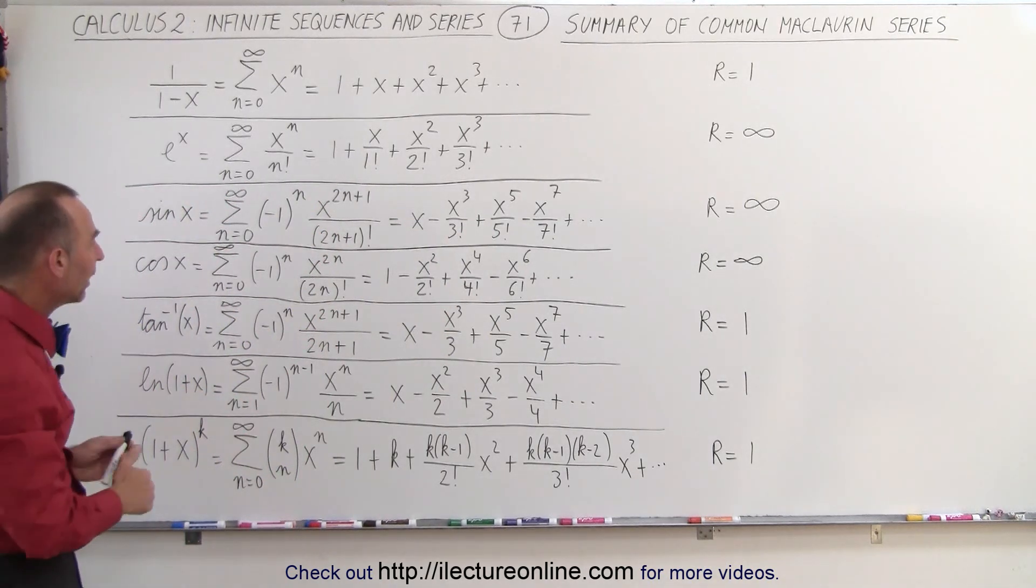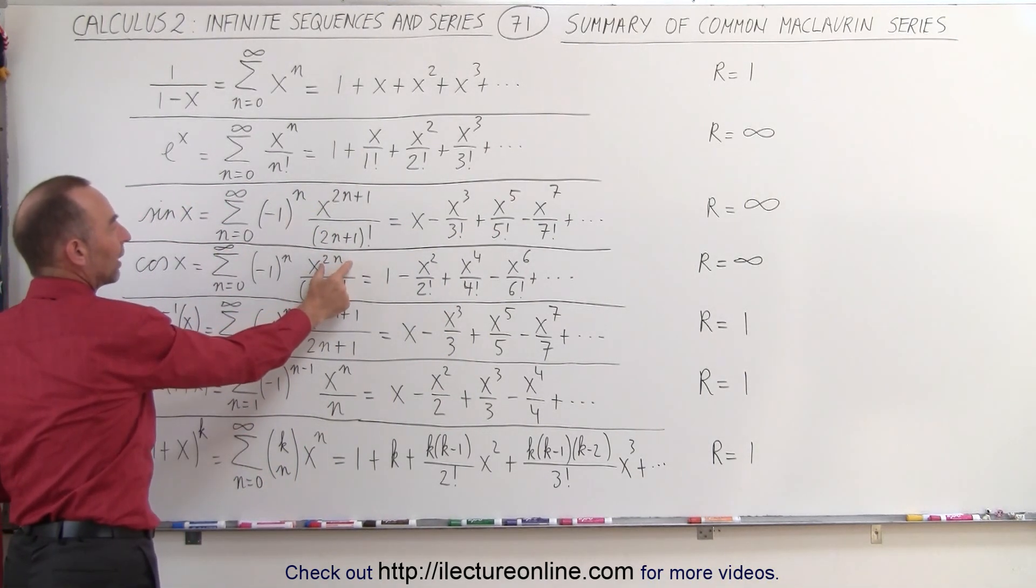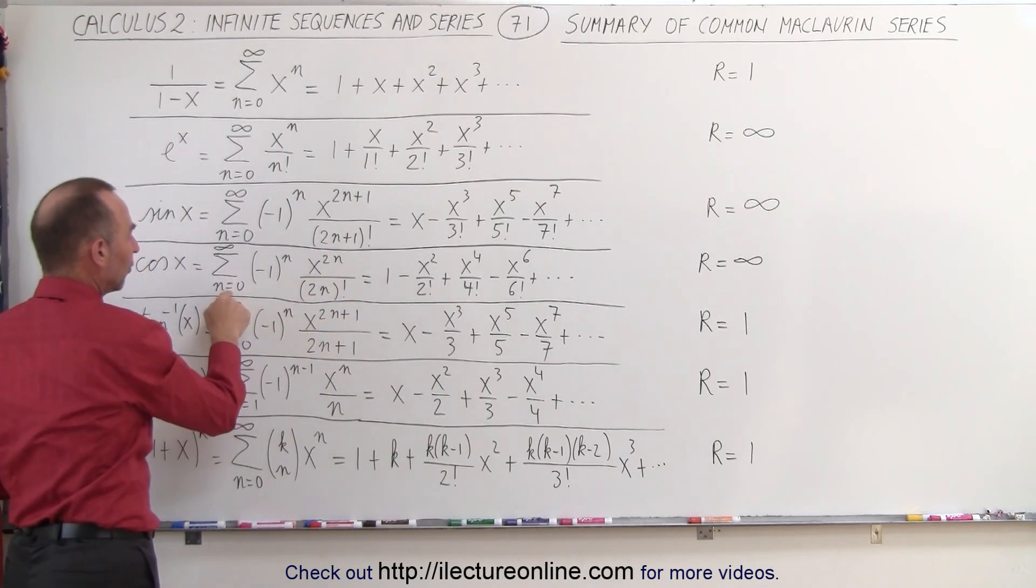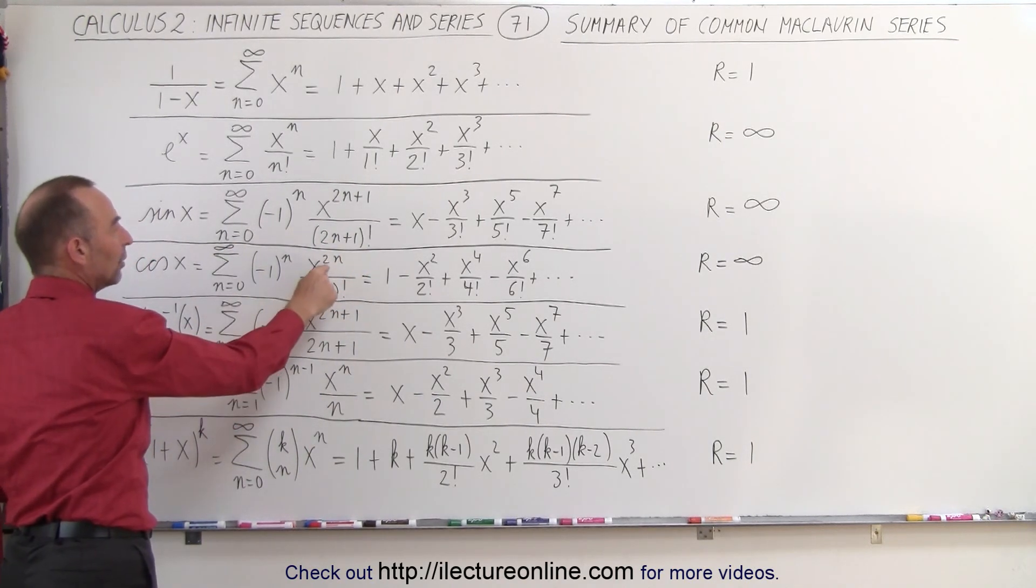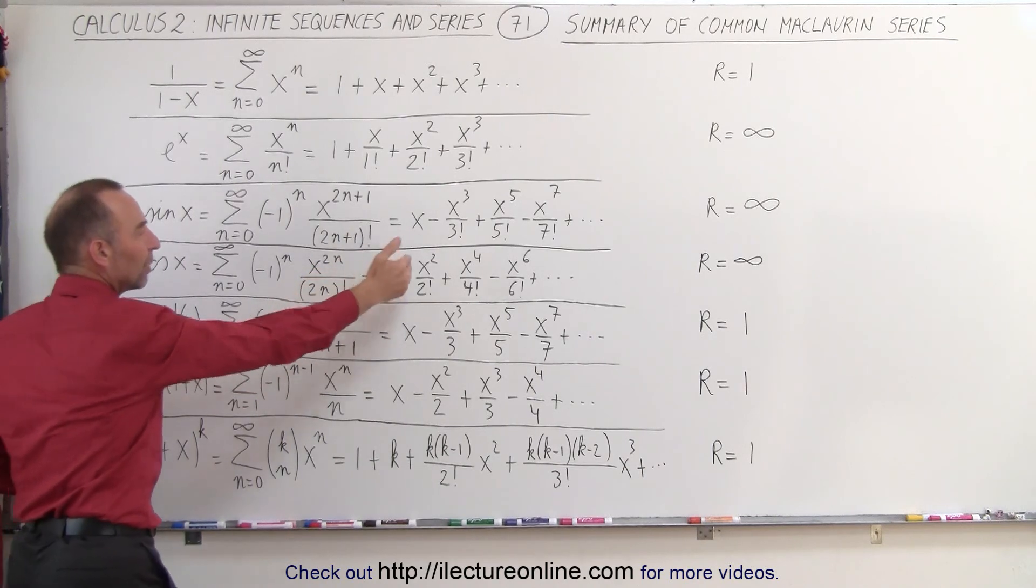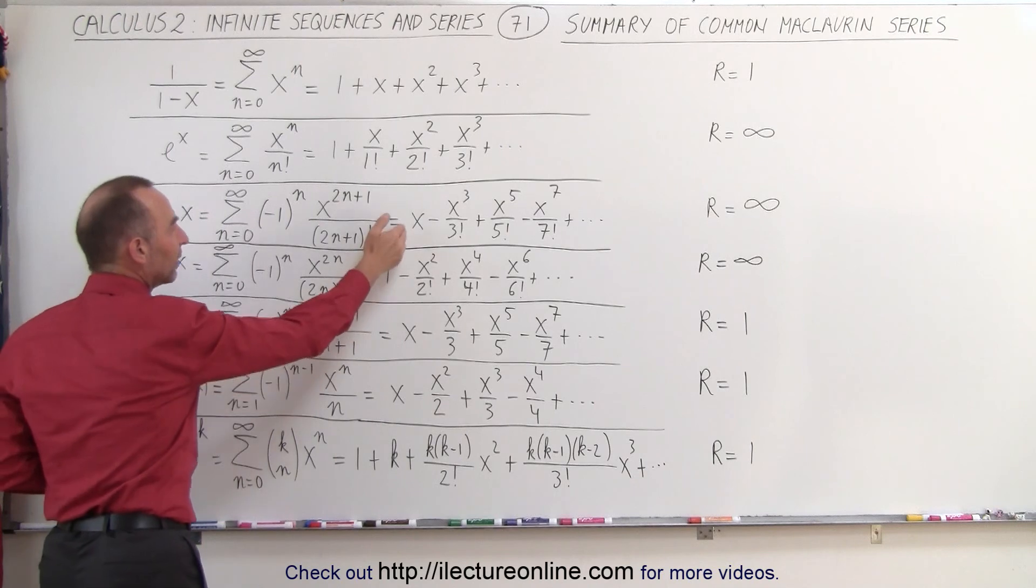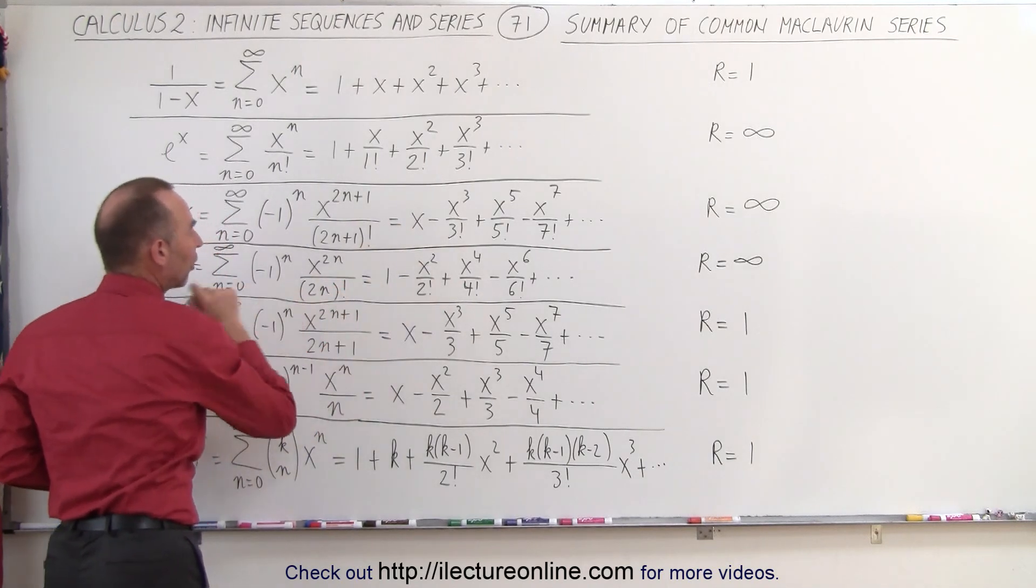For the cosine, we don't have the 2n plus 1, we simply have the 2n. We still alternate terms because n equals 0 to infinity. When we have 2n in the exponent, you skip every other term, but notice that we start from 1 instead of an x, and the signs also alternate.